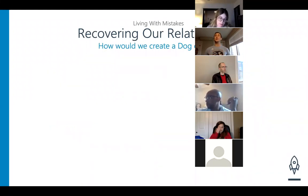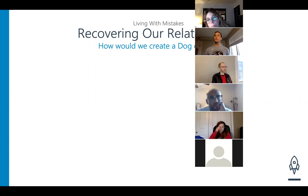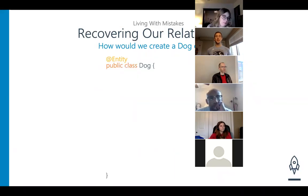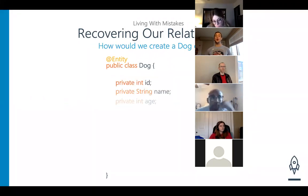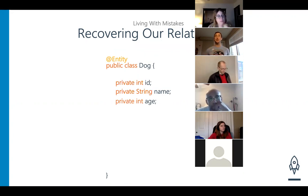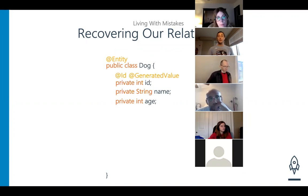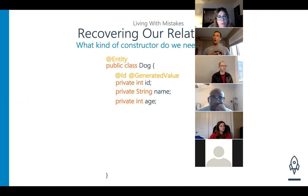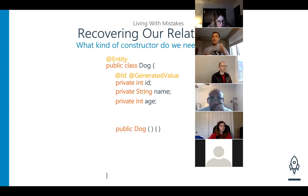Let's build the dog entity. We start with @Entity at the top, then public class Dog. I'll provide the id, name, and age properties with the @Id and @GeneratedValue annotations. An important question: what kind of constructor do we always need to include in an entity? An empty constructor — a blank constructor. This always needs to be in our entity, and then we can add whatever additional constructors we want after that, along with the appropriate getters and setters.